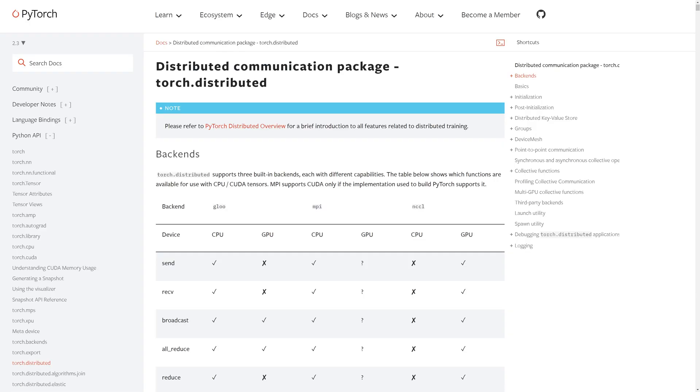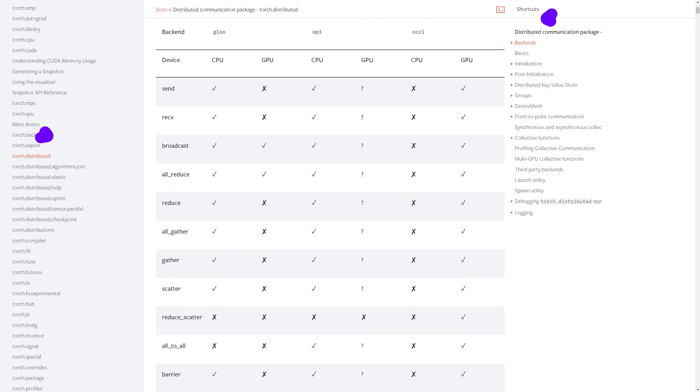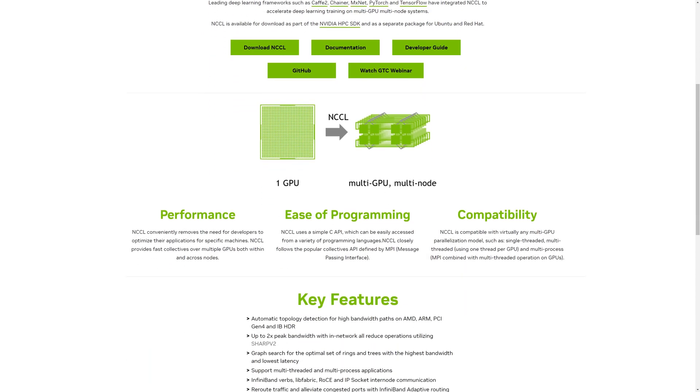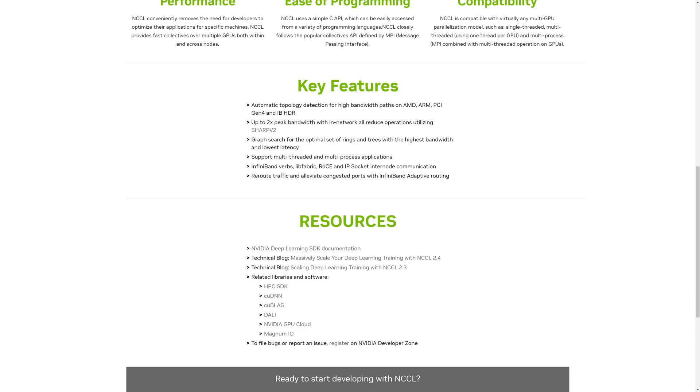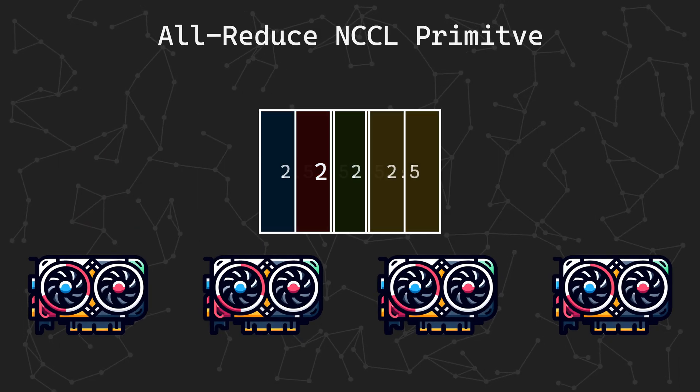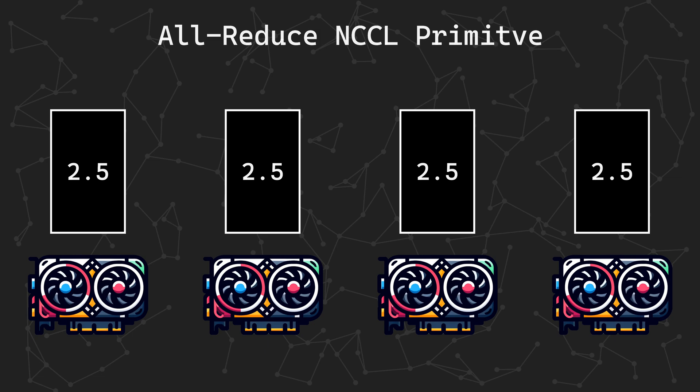During synchronization, we take the gradients from each GPU and average them. Remember, these are different because each GPU processed different training batches. This new set of average gradients is then sent back to all the GPUs. Each GPU receives the same set of gradients, ensuring they are synchronized. This operation is known as an all-reduce, a communication primitive that GPUs use to communicate.